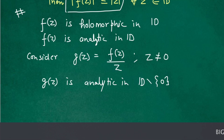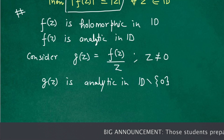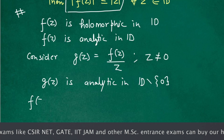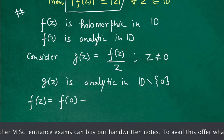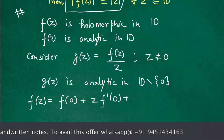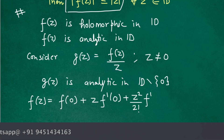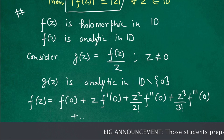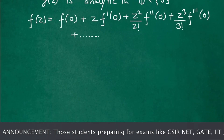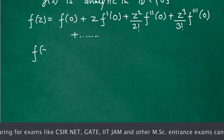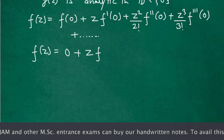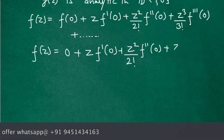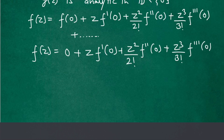Since f(z) is analytic, we can write its power series expansion. Writing the power series of f(z) centred at z = 0, we have f(z) = f(0) + z·f'(0) + (z²/2!)·f''(0) + (z³/3!)·f'''(0) + ... . It is given that f(0) = 0, so we can write f(z) = z·f'(0) + (z²/2!)·f''(0) + ... .